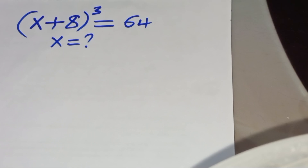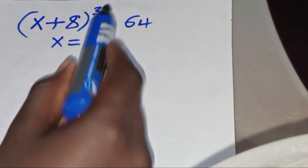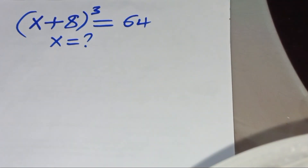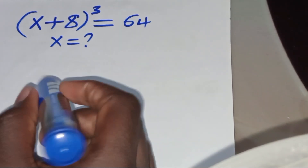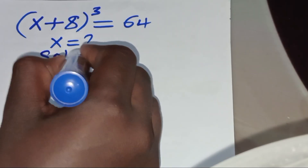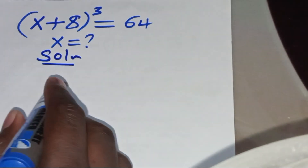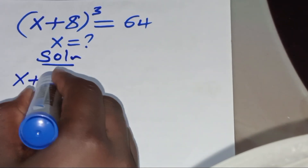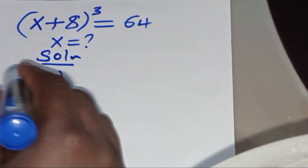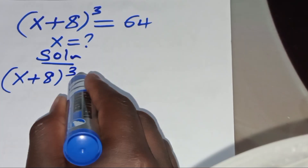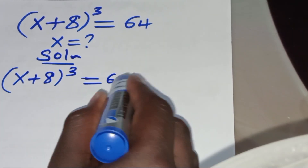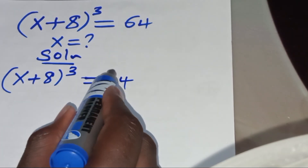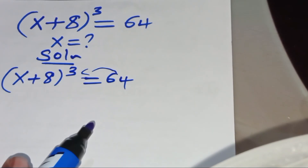Hello everyone, welcome. We're given this algebra problem: (x + 8)³ = 64. What is the value of x? So x plus 8 raised to power 3 is equal to 64. Let's take 64 to the left-hand side.